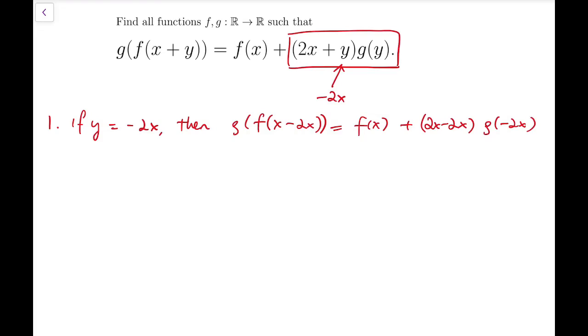Now regardless of the g term at the end, because 2x-2x is 0, the whole second term vanishes, so the right-hand side only becomes f(x).